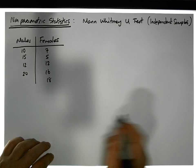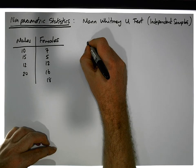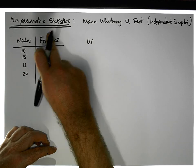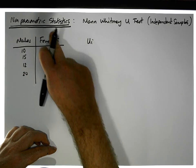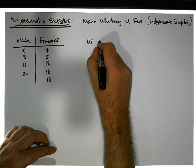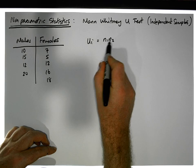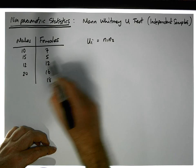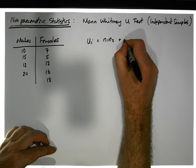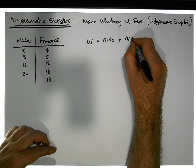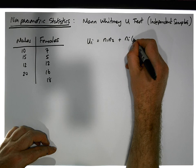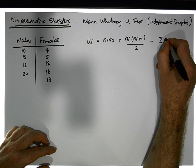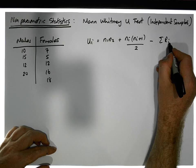And the statistic that we're going to use, it's actually quite straightforward. It's Ui, there's two groups, so we're going to calculate this twice, once for group one and then also for group two. So Ui is equal to n1 times n2, it's the product of the two samples, n1 being the sample size of males and n2 being the sample size of females, plus, depending on what group we're in, it's ni, the group size, times the group size plus one, divided by two, minus the sum of Ri, which is the sum of the ranks of the particular group that we're dealing with.